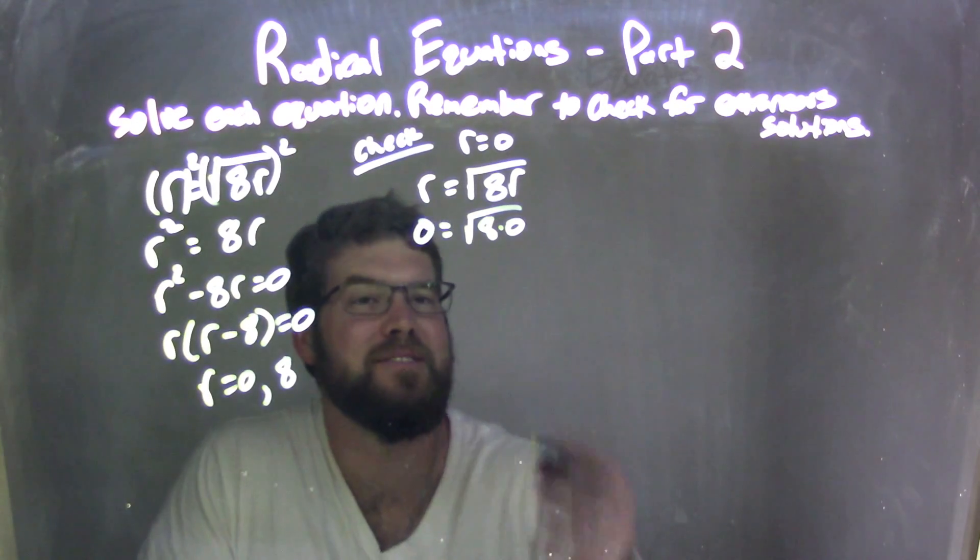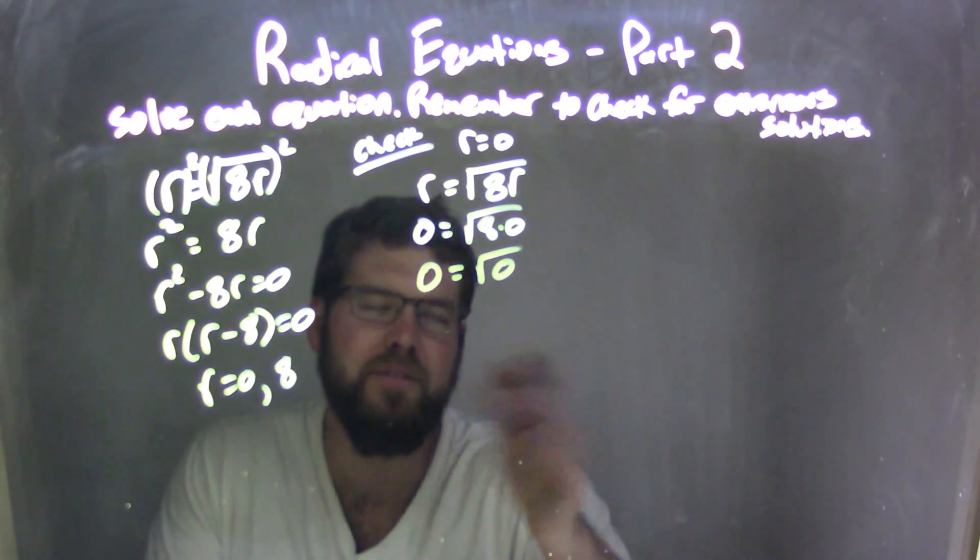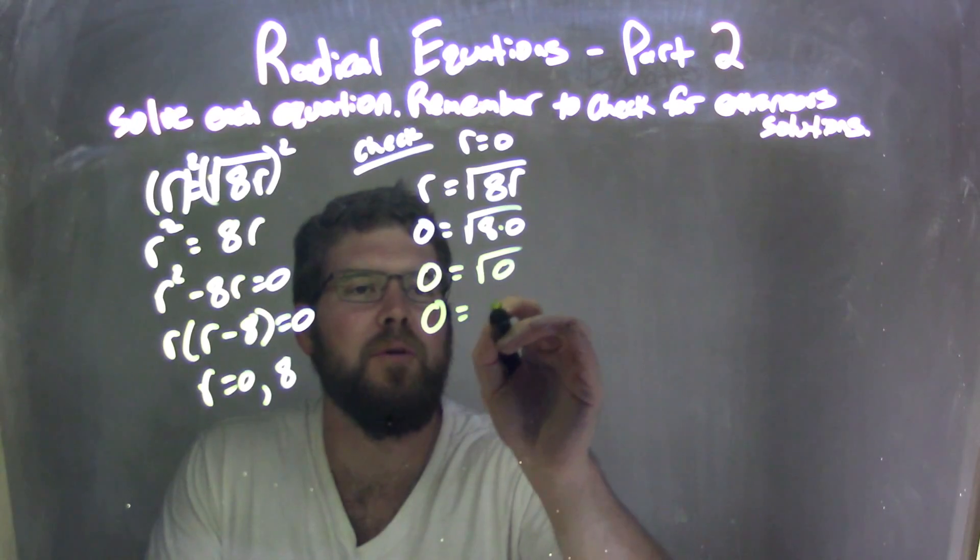8 times 0 is just 0, so 0 equals square root of 0. Square root of 0 is 0, so 0 equals 0. Fantastic.